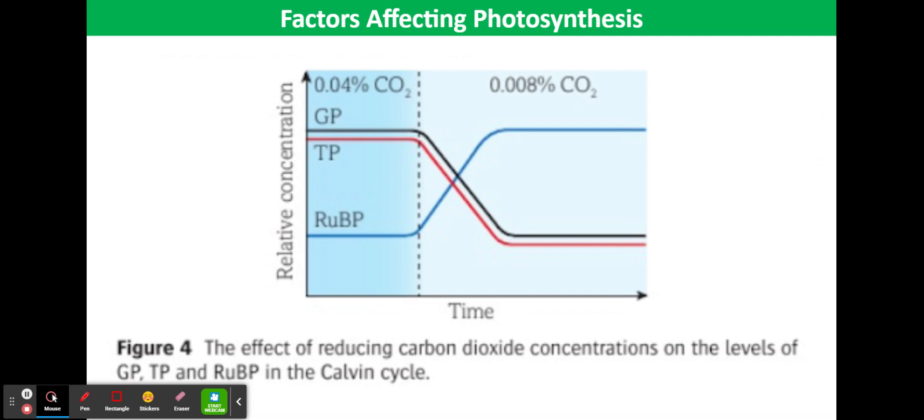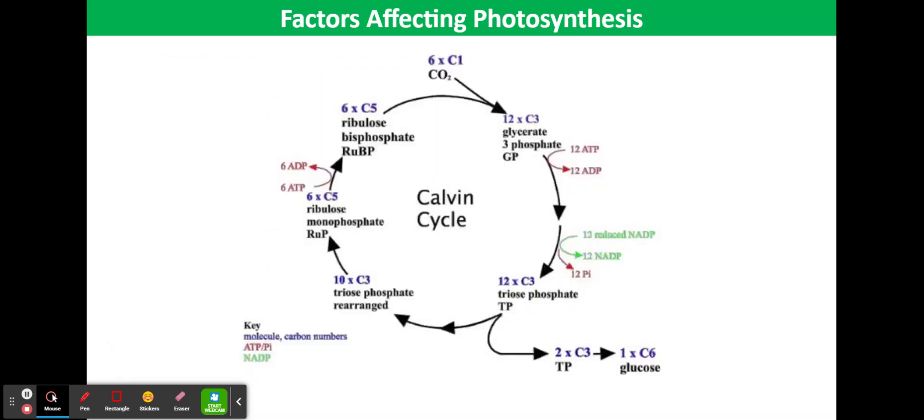GP cannot be made. Therefore, TP cannot be made. The Calvin cycle involves many enzyme-catalyzed reactions and therefore is sensitive to temperature.